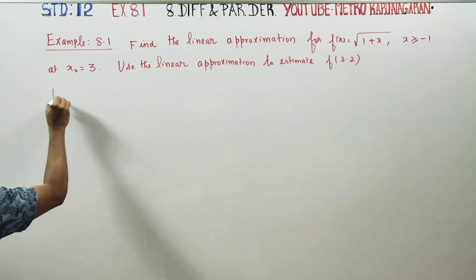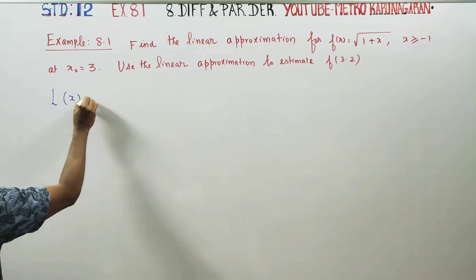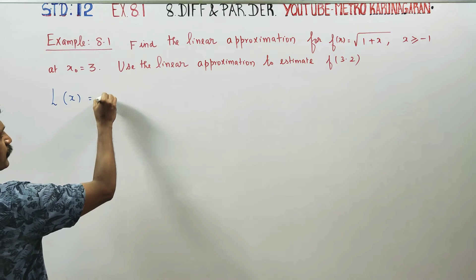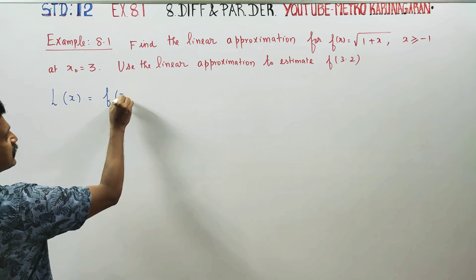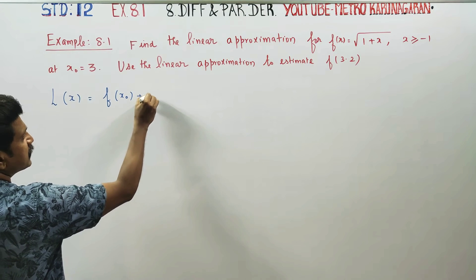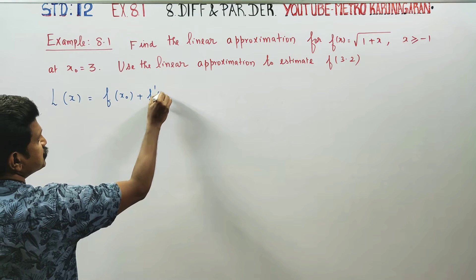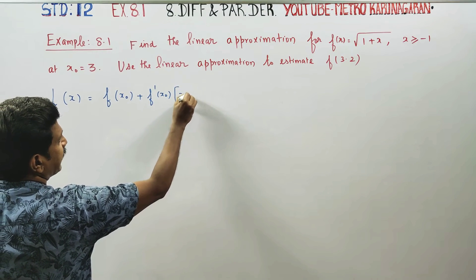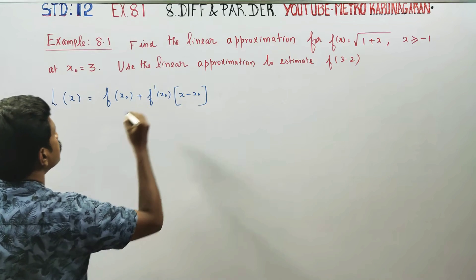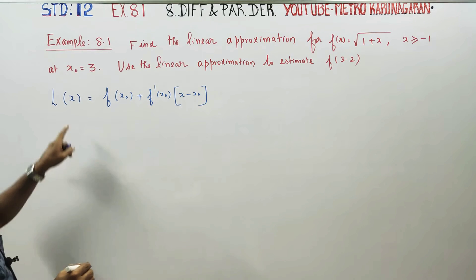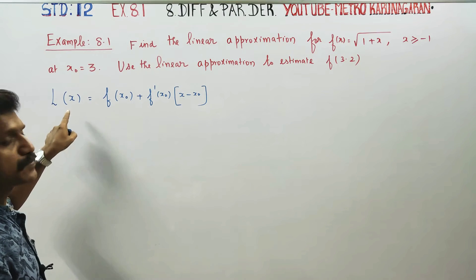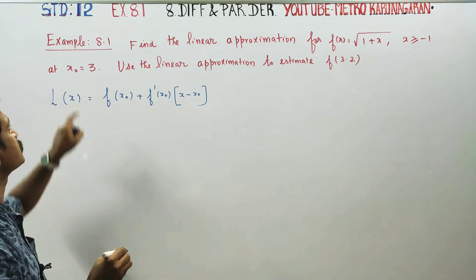Linear approximation of x. This formula: L(x) = f(x₀) + f'(x₀) · (x − x₀). This is the linear approximation of x at x₀.